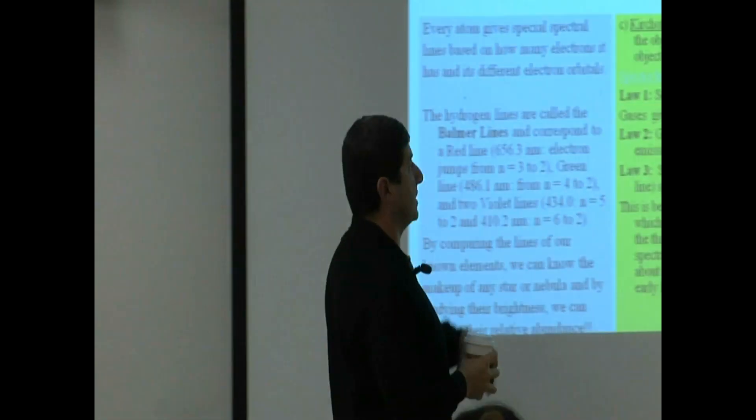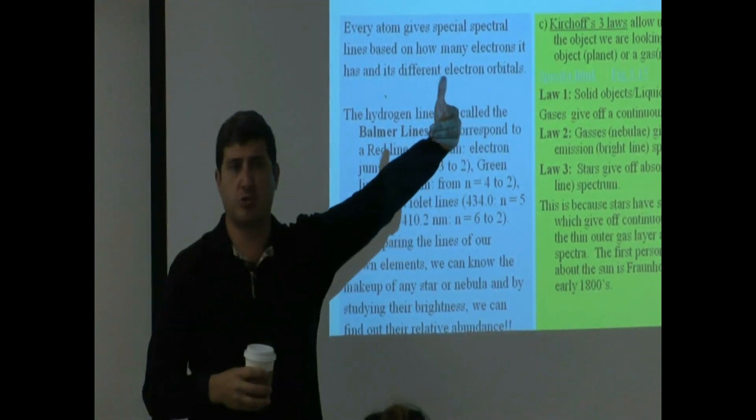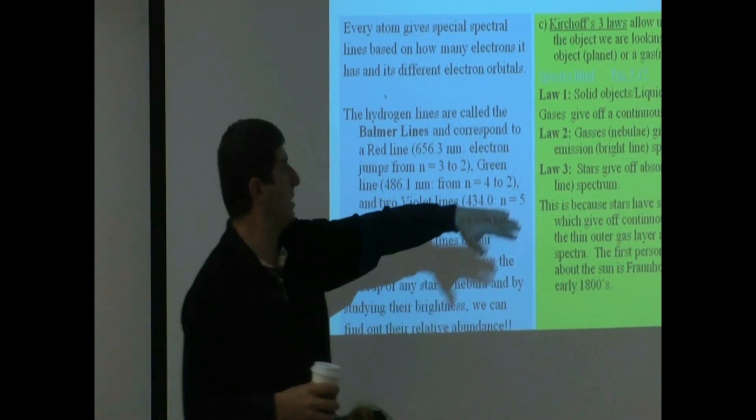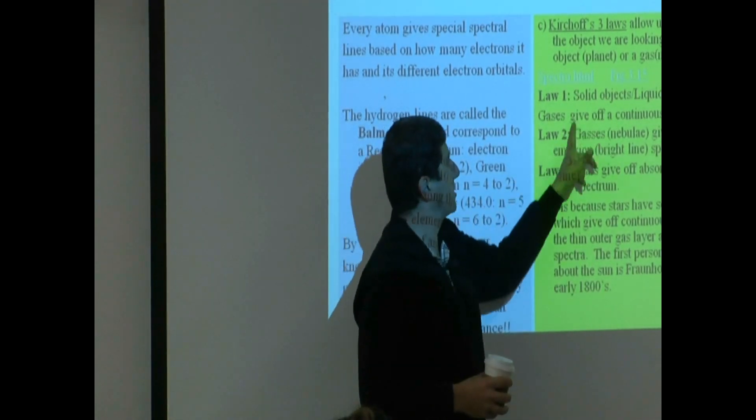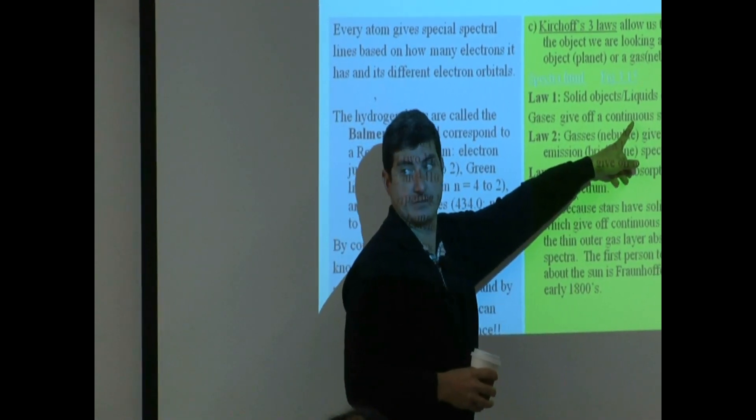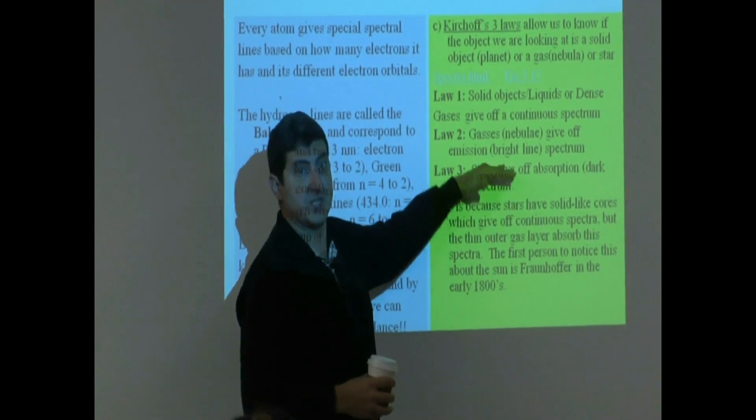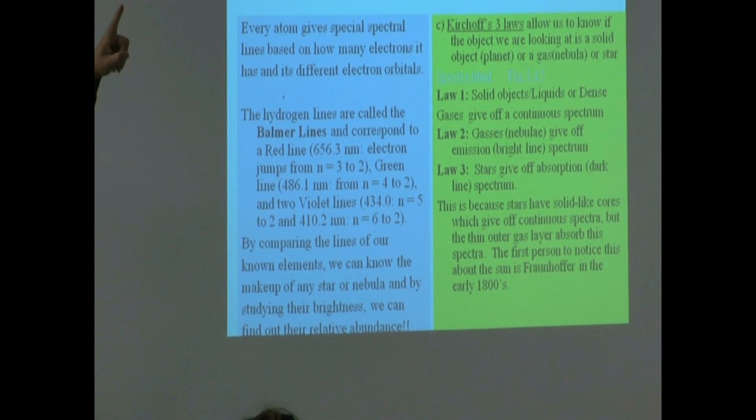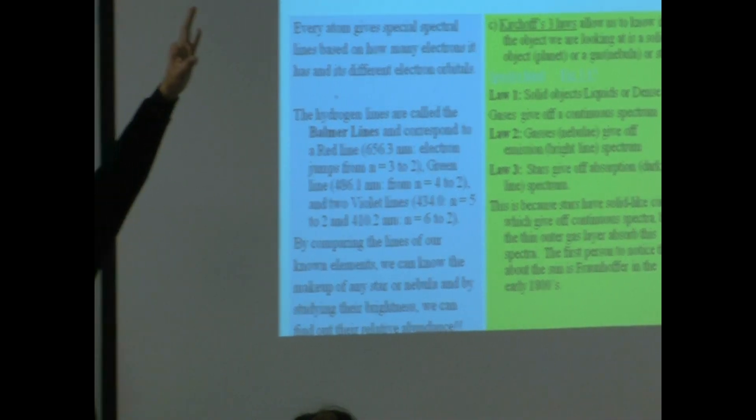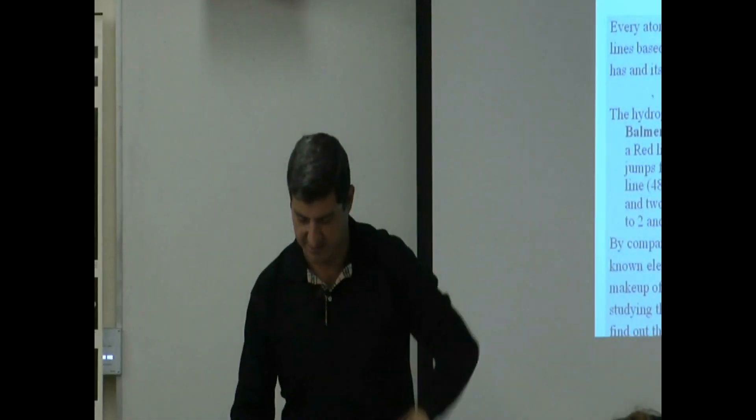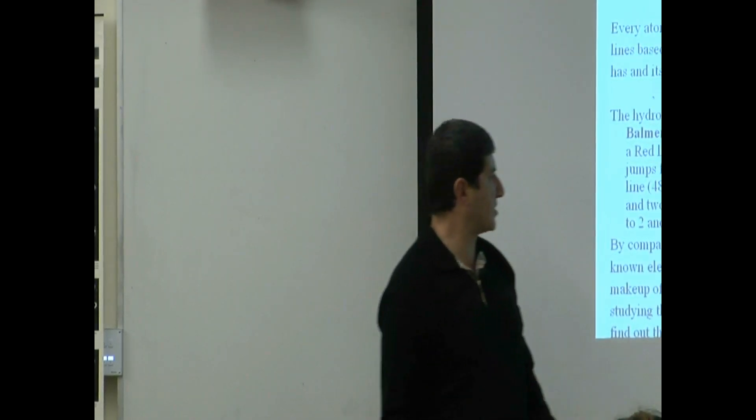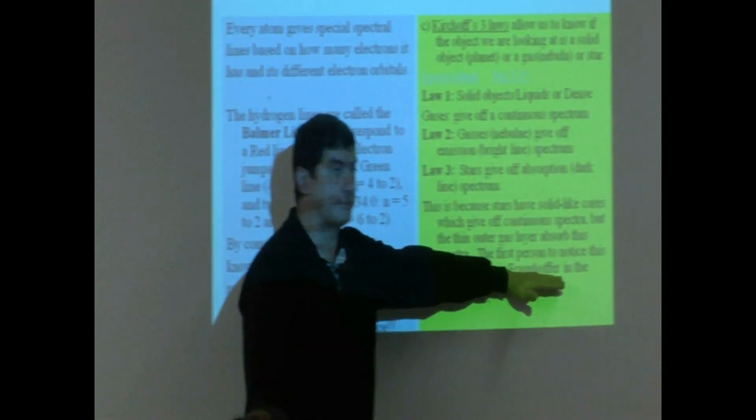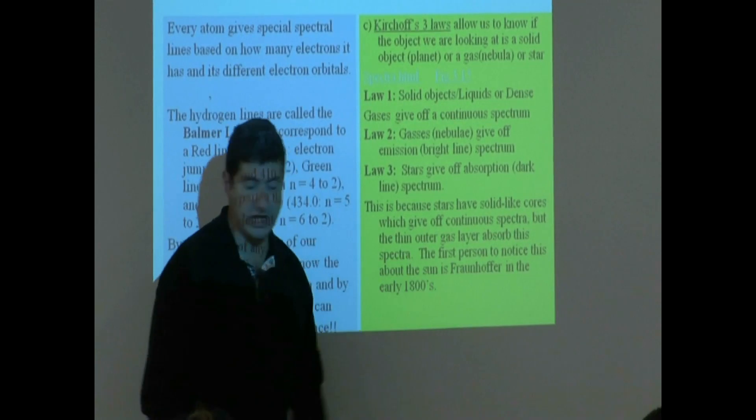Yeah, the Earth and the Moon, if you were from outer space and you were viewing the Earth and the Moon, it would give you continuous spectra. Only the Sun is the third one. The Sun would, only the Sun is the third one. Exactly. So that's how we can pinpoint, we can tell if something that we're looking at is a star, is it a gas, is it a planet? The first person to know this and study this is a German physicist known as Fraunhofer.